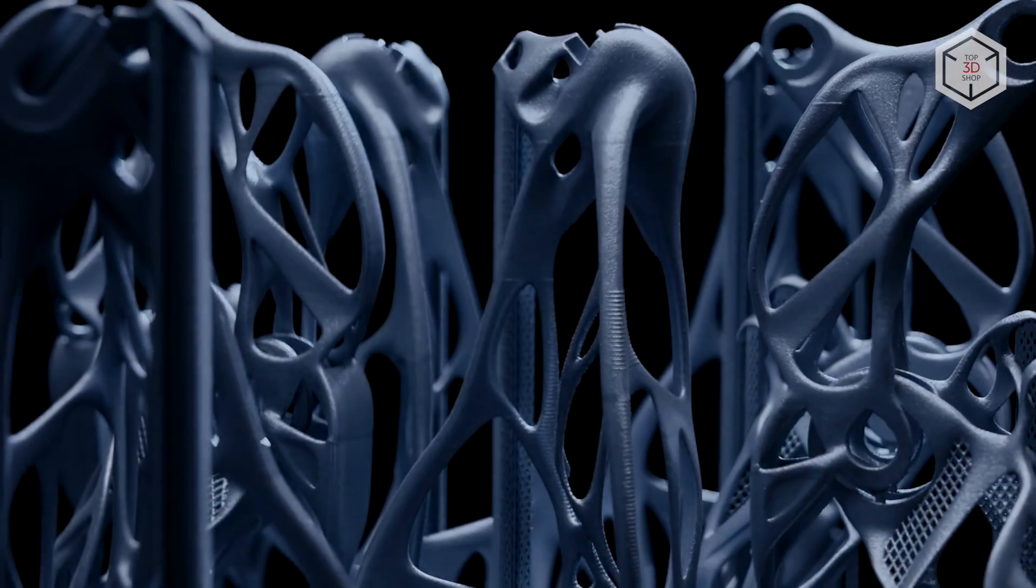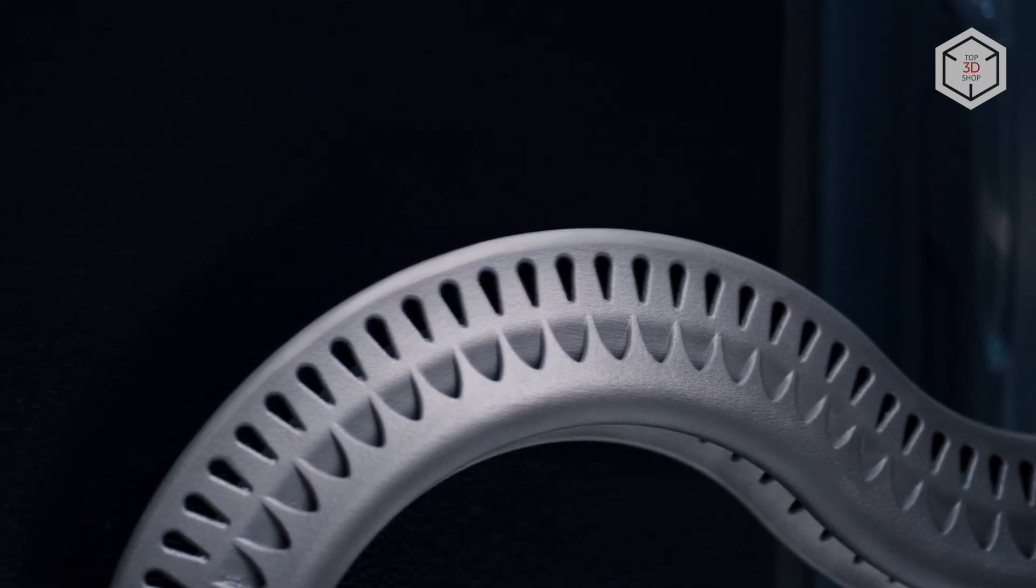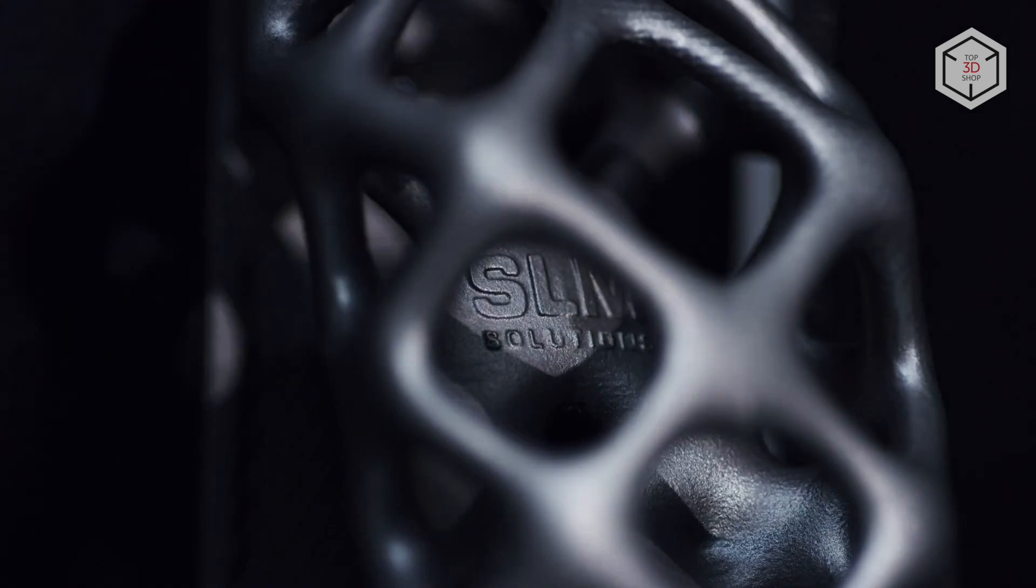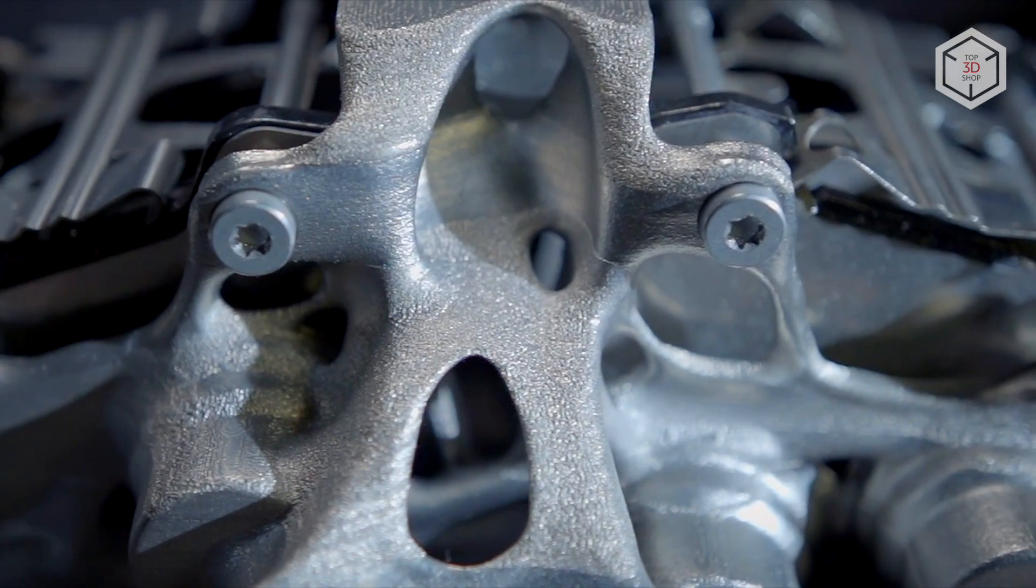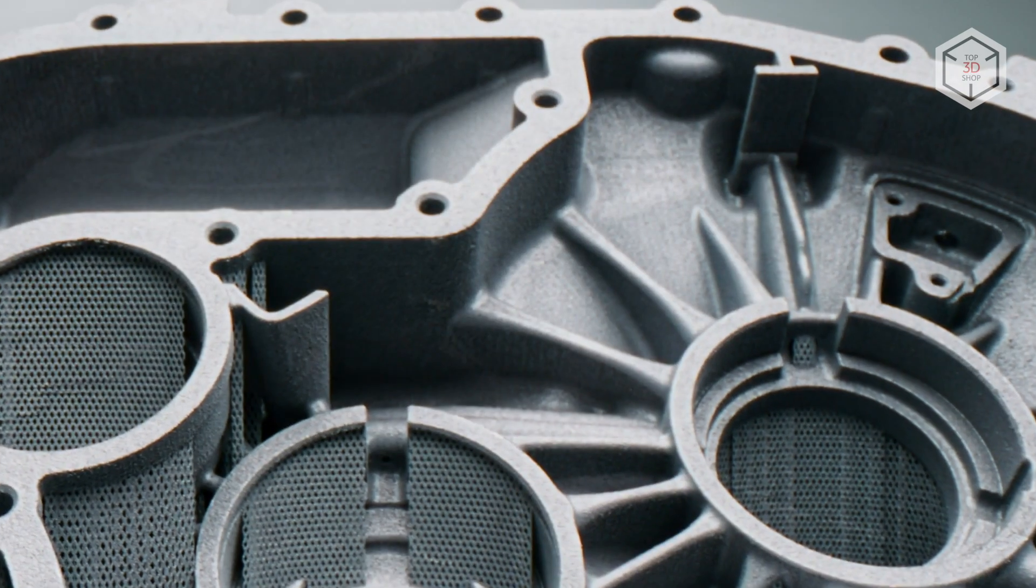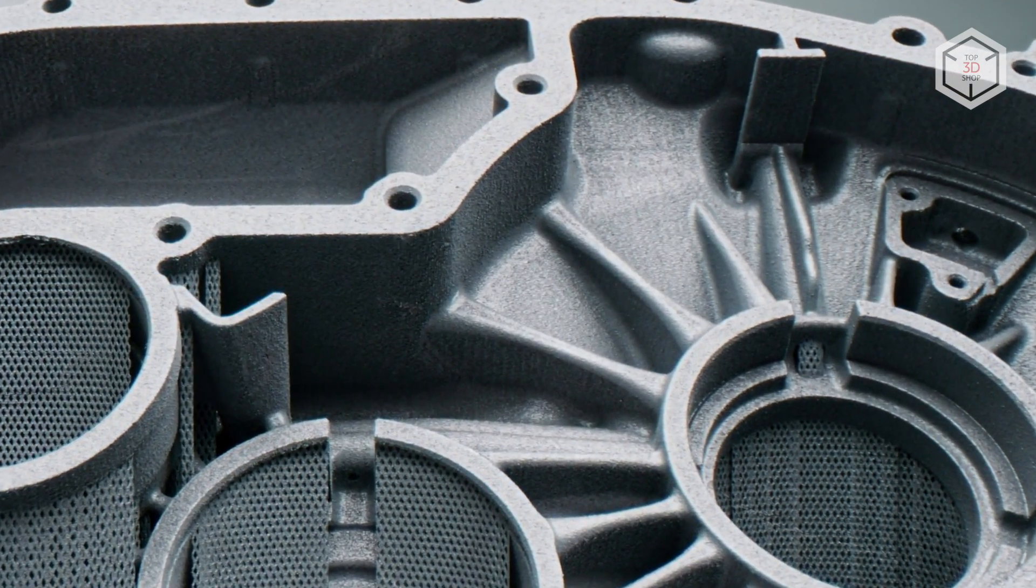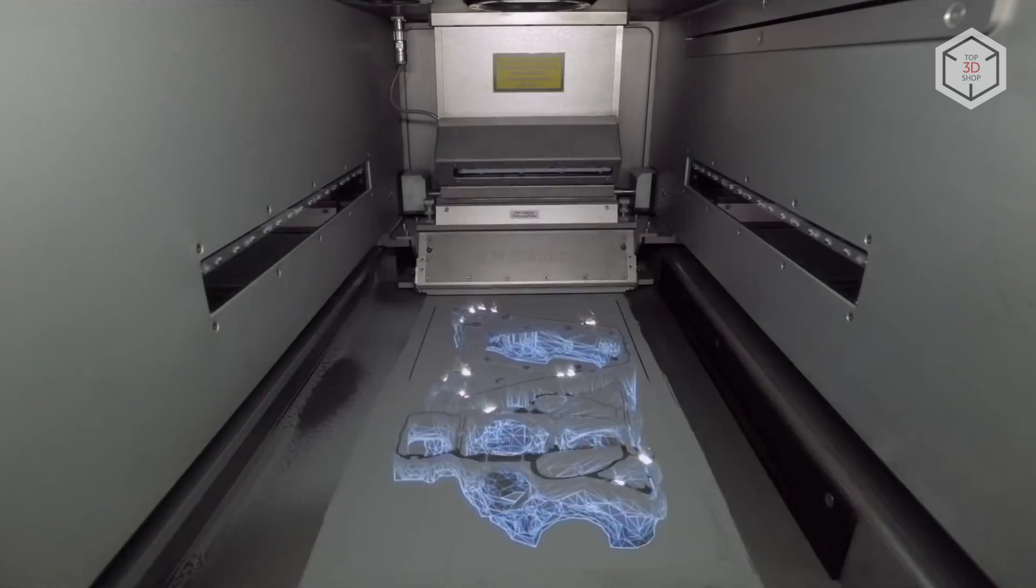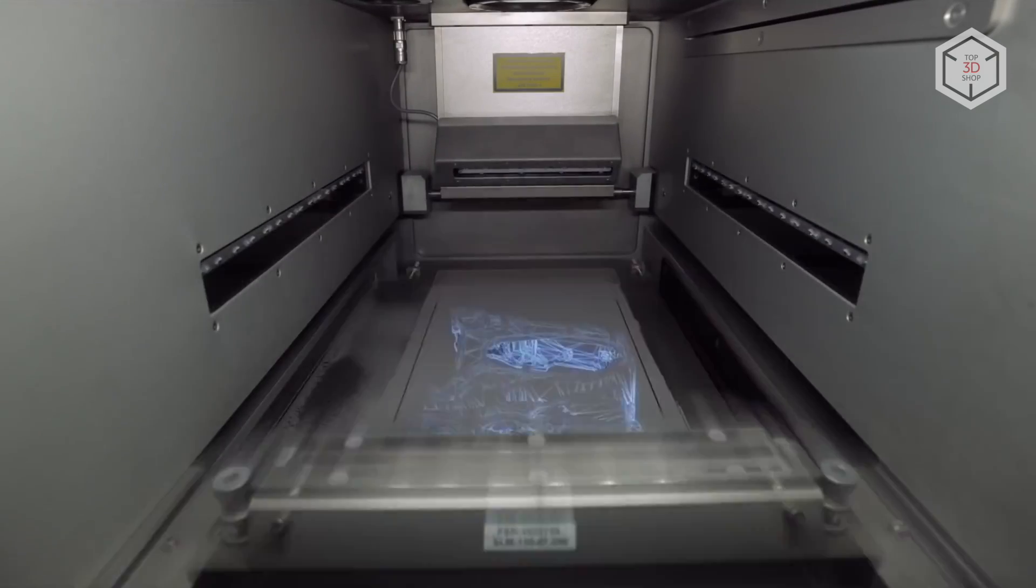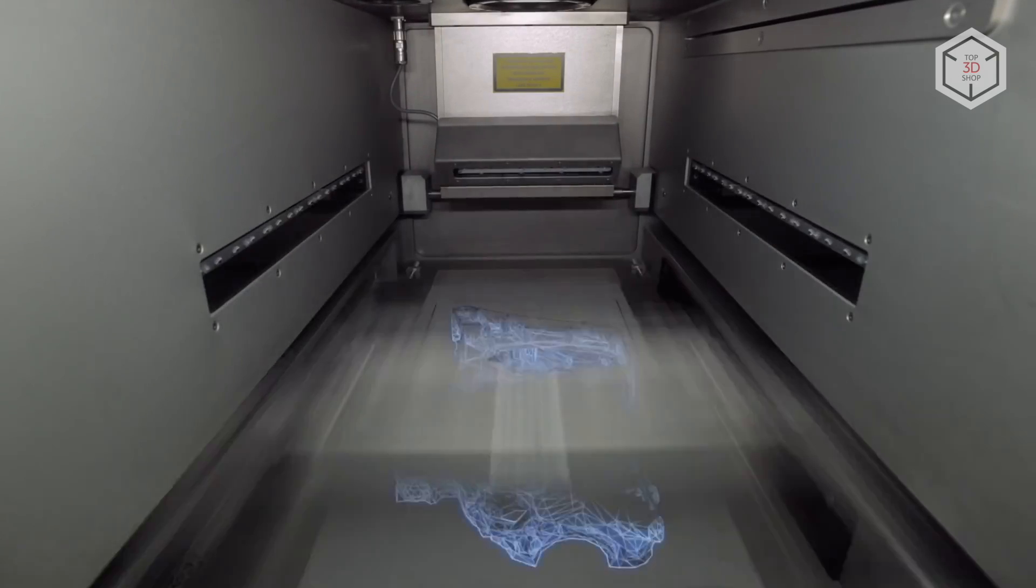With SLM, multi-component parts can be printed in a single session. Objects can have internal lattice structures to reduce weight and complex internal channels that cannot be made with traditional techniques. Overall, SLM 3D printing also eliminates the need to maintain constant stocks of components and deliver parts over long distances. In addition, it is a more environmentally friendly method that uses fewer consumables and generates less waste.